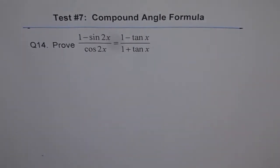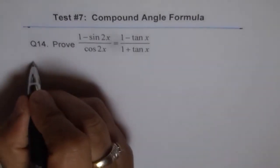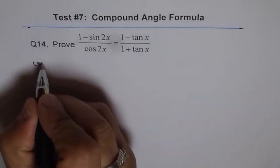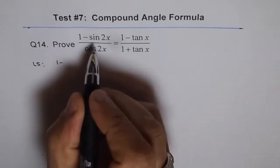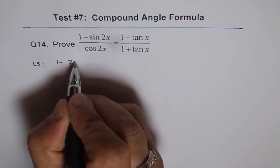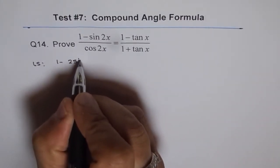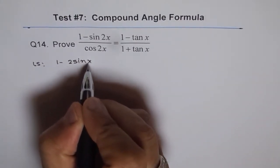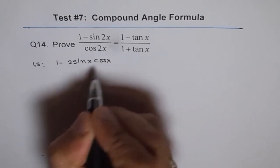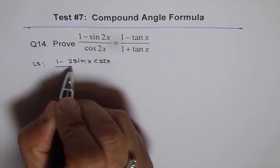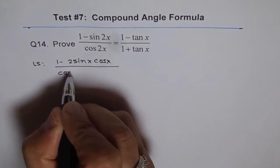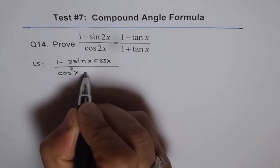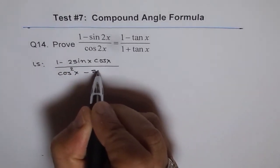To prove this, we can start from the left side and expand it. So 1 minus sine 2x — sine 2x can be written as 2 sine x cos x. And cos 2x can be written as cos squared x minus sine squared x.